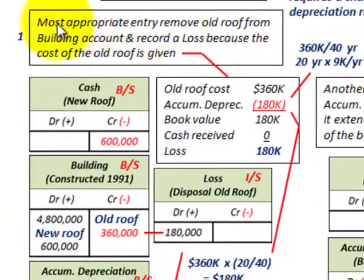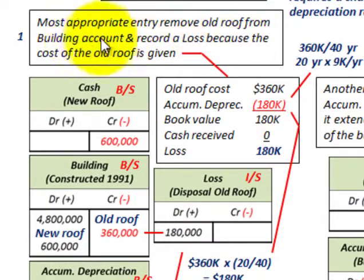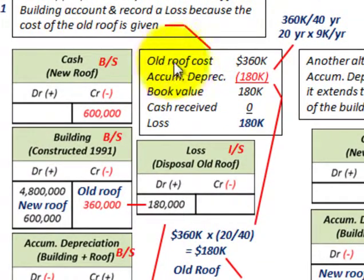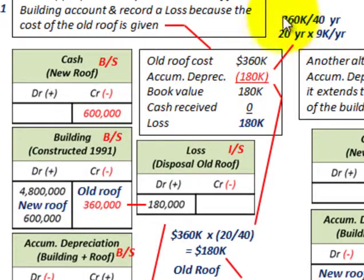Let's look at the most appropriate entry for recording this on our books. We would remove the old roof from the building account and record a loss, because the cost of the old roof is given. To determine our loss: the old roof cost was $360,000 and accumulated depreciation was $180,000.